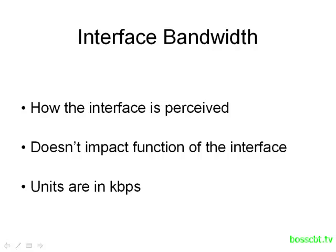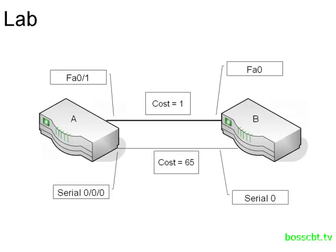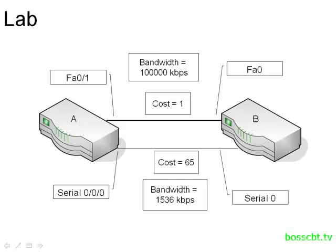Keep in mind, the bandwidth command works in kilobits per second. In our lab, the default bandwidth on the serial interface is 1,536 kilobits per second, and on the Fast Ethernet it's 100,000 kilobits per second. What we're going to do is make the Fast Ethernet bandwidth much lower, and by doing that, its cost is going to increase — with the goal of having router A prefer the serial interface.